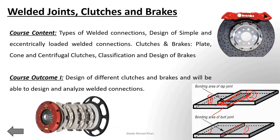If the direction of the applied load is parallel to the direction of the weld, this particular type of connection is known as a double parallel fillet joint. The analysis of both joints is done in a different way. The transverse fillet joint fails because of tensile load, while the parallel fillet joint fails under shear loading.